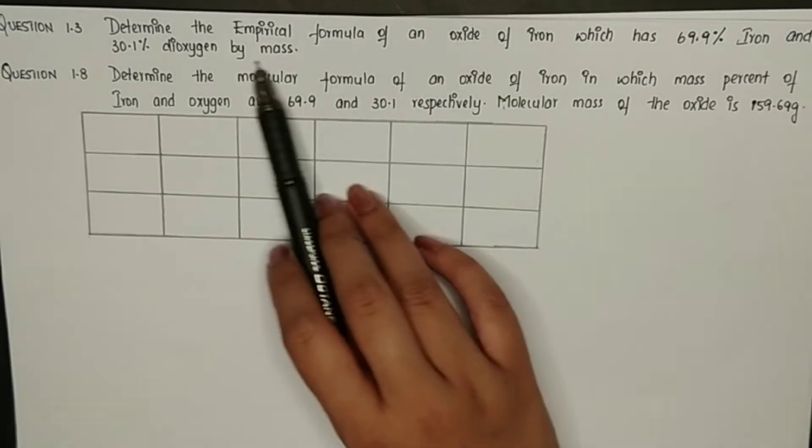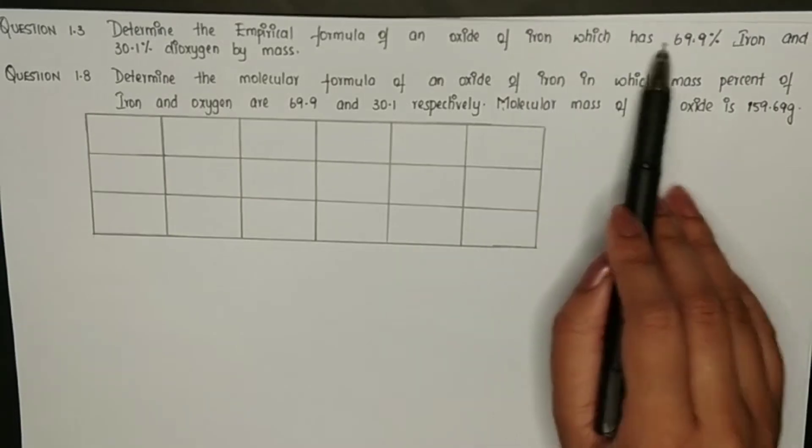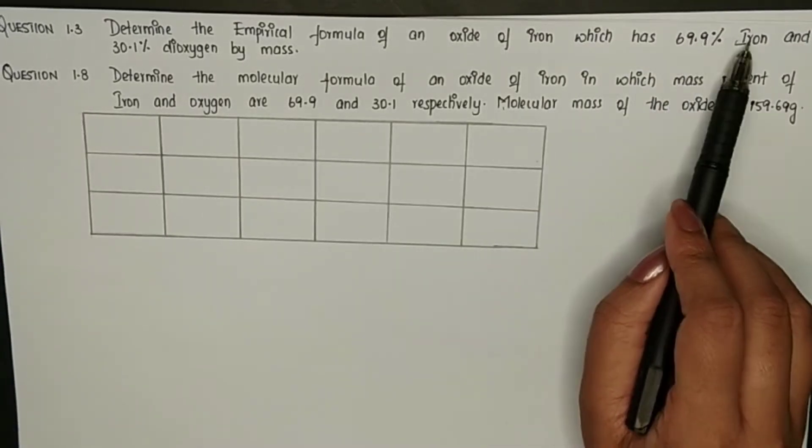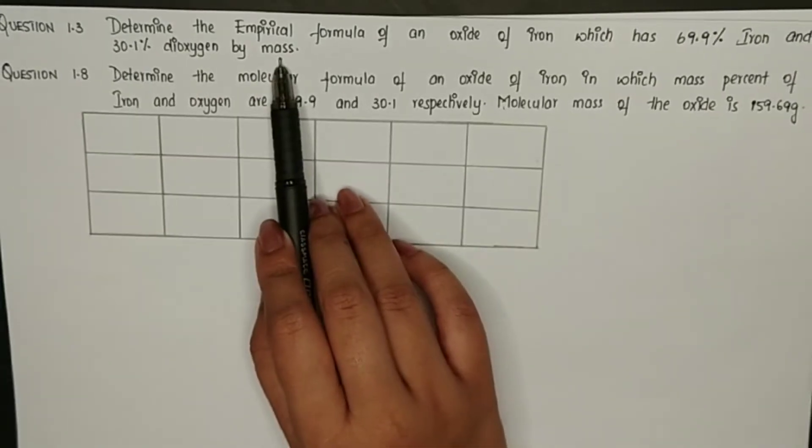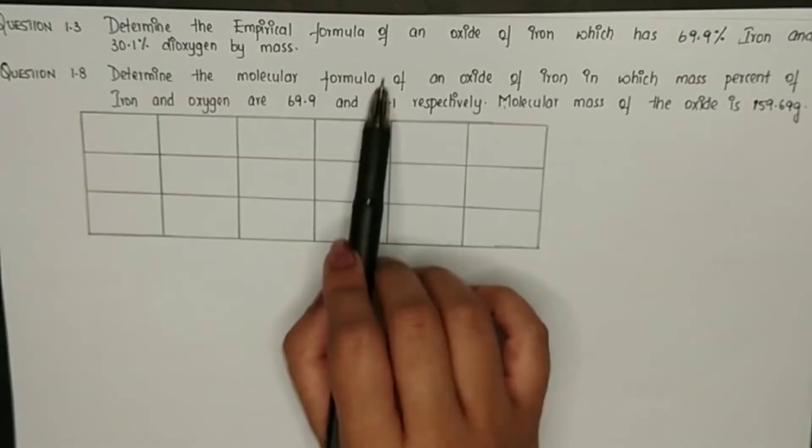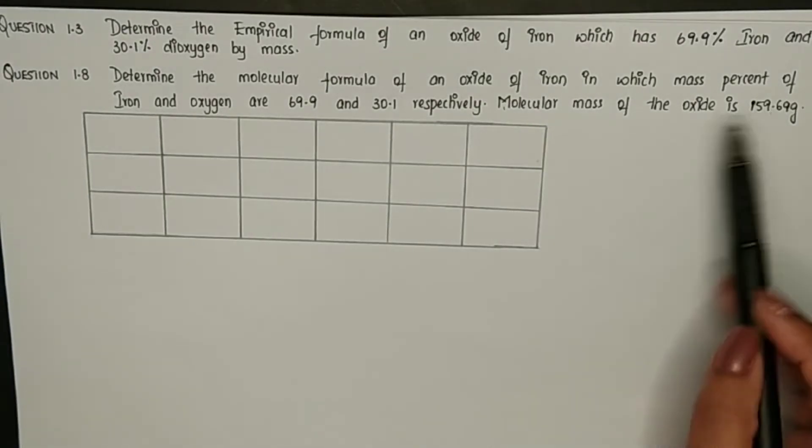As per the question, determine the empirical formula of an oxide of iron which has 69.9% iron and 30.1% dioxygen by mass. In the second one, because molecular formula is asked, molecular mass of the oxide is mentioned. So we will see how to solve it.